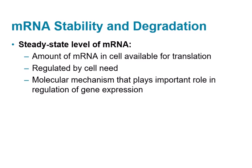Another level of gene expression in eukaryotes is the amount of messenger RNA available at the time. That level of the amount of messenger RNA available at a particular time is called the steady-state level of messenger RNA. And that level determines how much gene expression — how many copies of the proteins need to be produced from that particular messenger RNA.